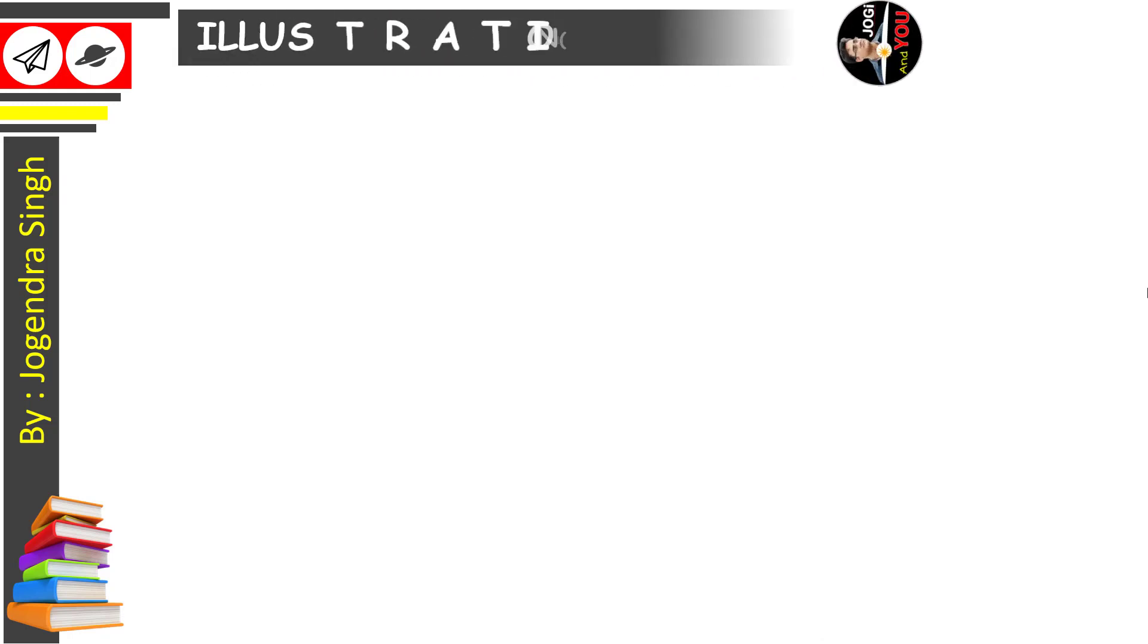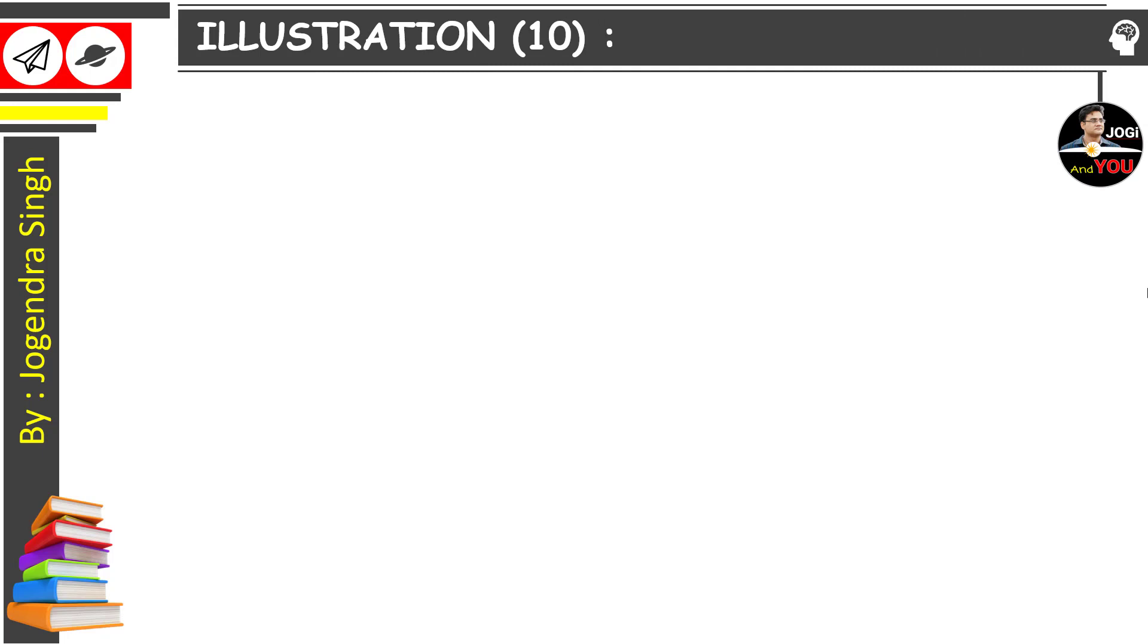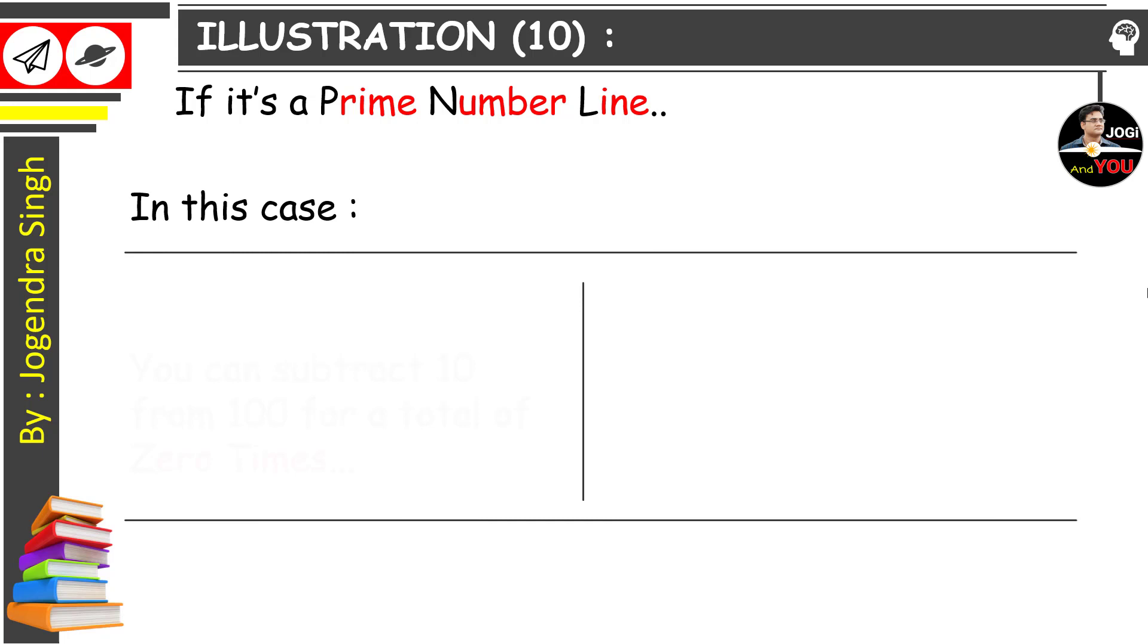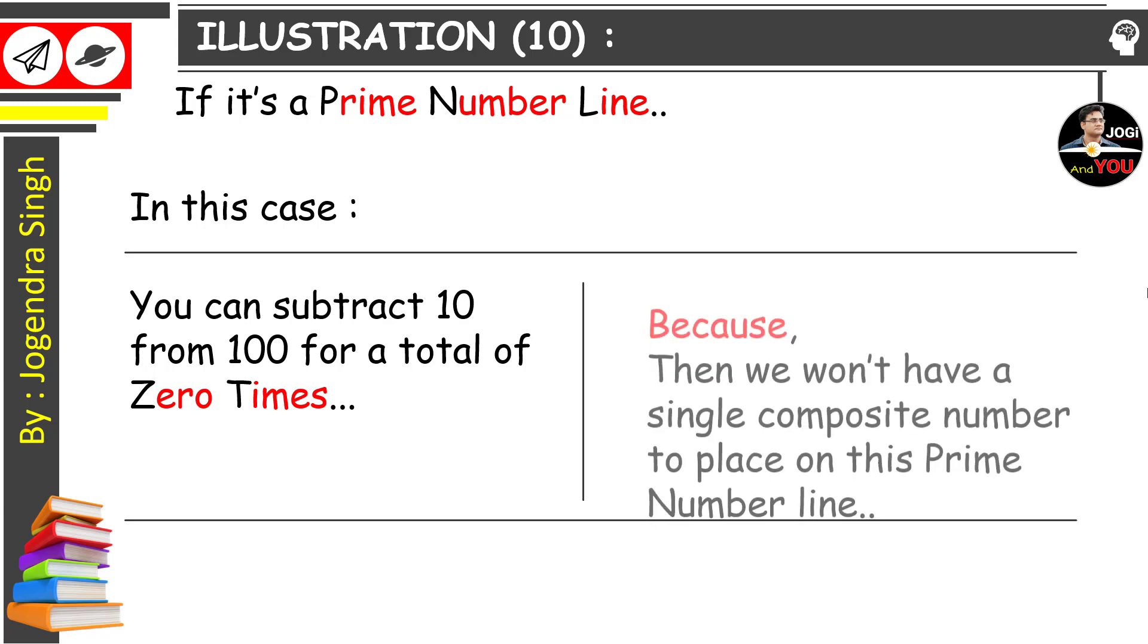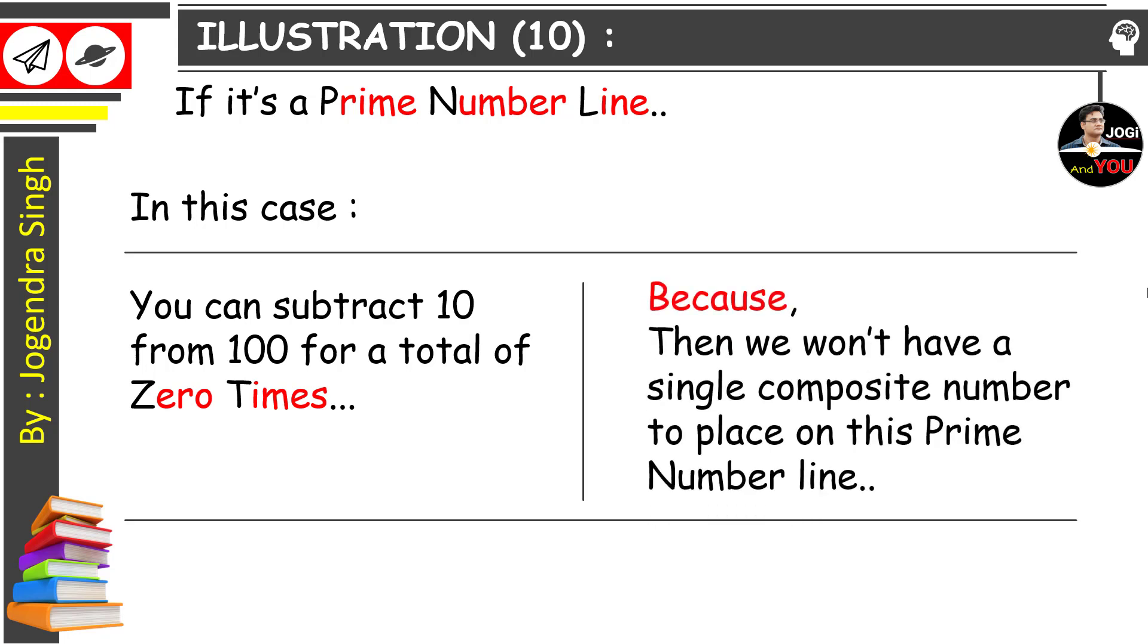Well, now come to illustration number 10. If it's a prime number line, in this case you can subtract 10 from 100 for a total of 0 times. Why? Because then we won't have a single composite number to place on this prime number line, so we leave them out.